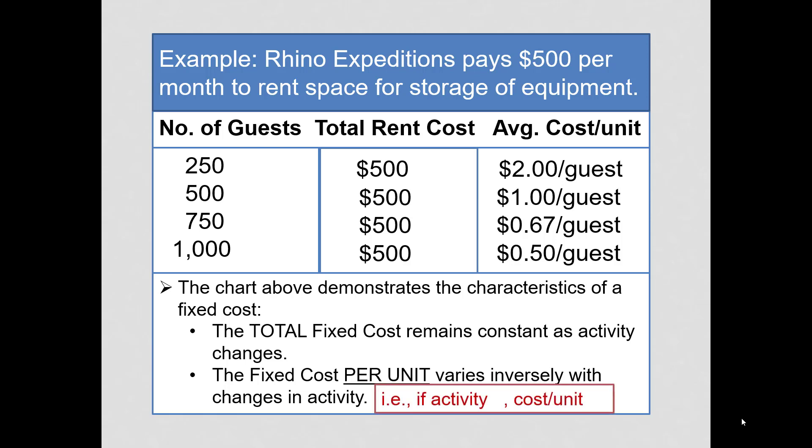So when we say varies inversely, what we mean is if activity increases, the cost per unit decreases.